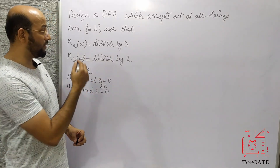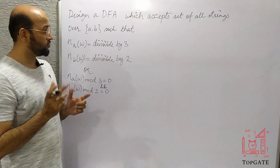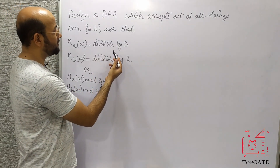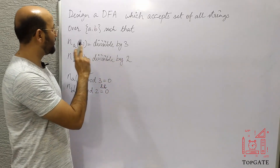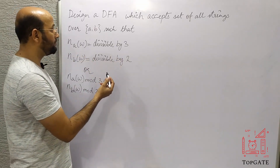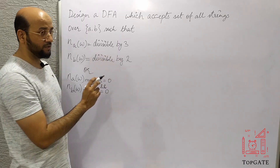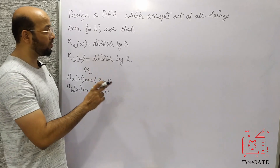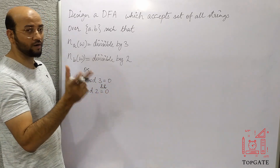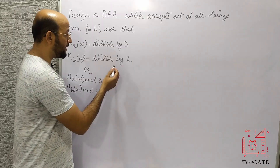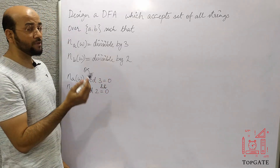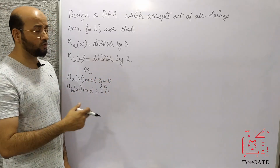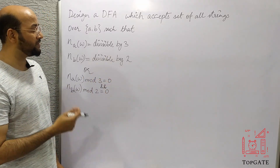Let's first understand what kind of language this is and what is the shortest possible string. The strings should be made up of A and B, and all strings should contain A's divisible by 3 — that is multiples of 3: either 0, 3, 6, or 9 number of A's. They should also contain B's as multiples of 2: either 0, 2, 4 number of B's, and so on.